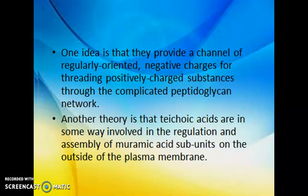Another theory suggests that teichoic acids are in some way involved in the regulation as well as the assembly of muramic acid subunits — that is NAM and NAG. So teichoic acids are involved in the regulation and assembly of these NAM and NAG subunits on the outside of the plasma membrane, especially in gram positive bacterial cells.